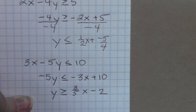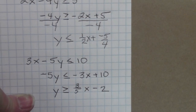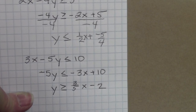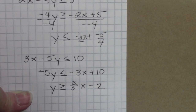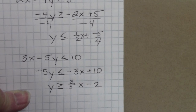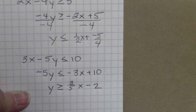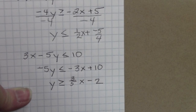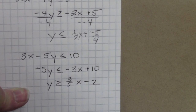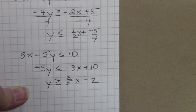Once your inequalities have been solved for y, enter them just like you did on the last step. Be careful with the fractions — make sure that you enclose them in parentheses. Also be very careful with the shading. Notice that since the inequality symbols have turned around, our inequalities are y is less than or equal to one-half x minus five-fourths, and y is greater than or equal to three-fifths x minus 2.